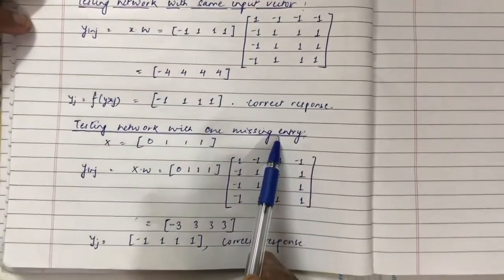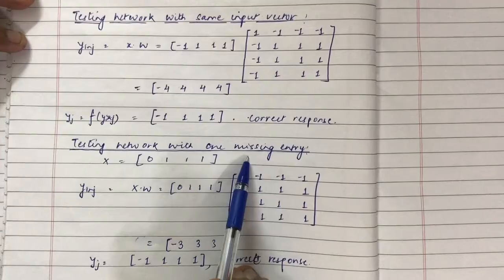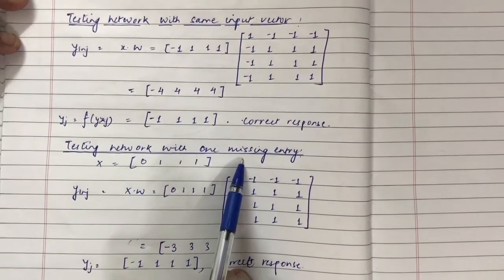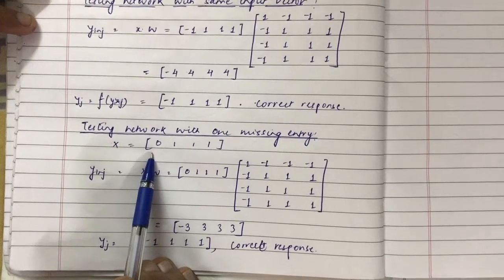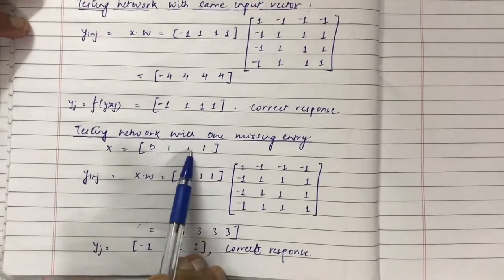Now, testing the network with one missing entry. What is a missing entry? Replacing the value of 1 with 0, or minus 1 with 0, is known as a missing entry. Here we have replaced the value of minus 1 with 0 and all other entries are the same.